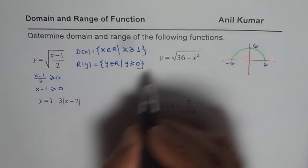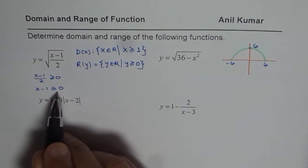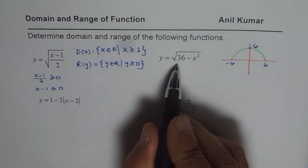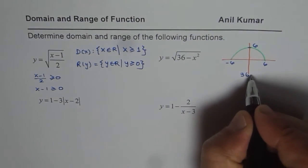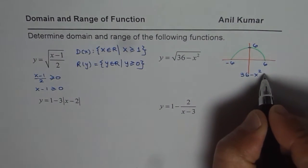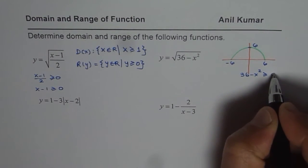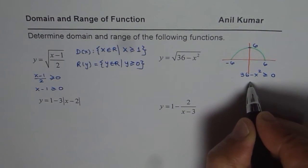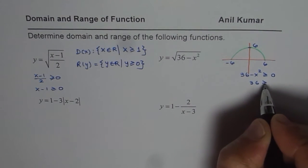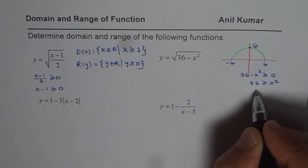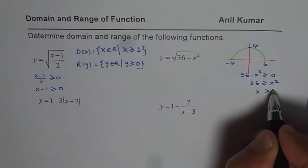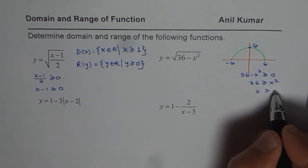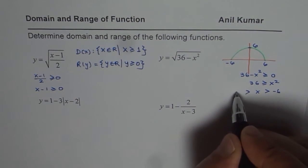The other way is the same algebraic method. For this function, 36 minus x squared should be greater than or equal to 0, or 36 should be greater than or equal to x squared. When you take the square root, x is greater than minus 6 and less than plus 6.